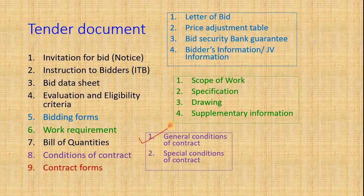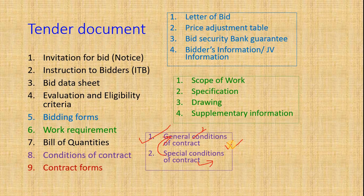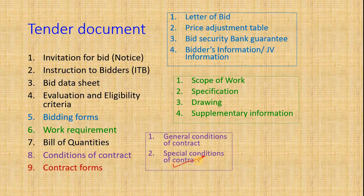Conditions of Contract: the General Conditions of Contract (GCC) are already available in the standard bid document and do not need to be changed. Special Conditions of Contract (SCC) are modifications to the GCC that vary from project to project. The SCC includes how much performance bond is to be deposited by the successful bidder, when work will start and end, how payment shall be made in running bills and final bills, and how advance payments shall be made. In case of a dispute, the Special Conditions of Contract are given first priority over the General Conditions of Contract.